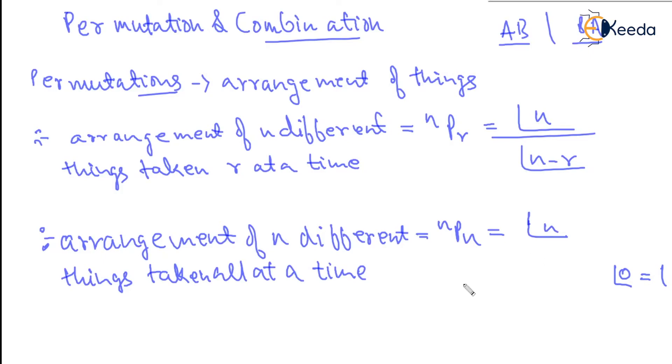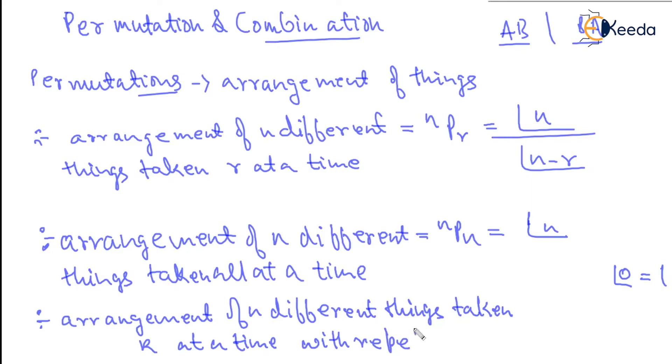And if we have arrangement of n different things taken k at a time with repetition, it is n to the power of k.